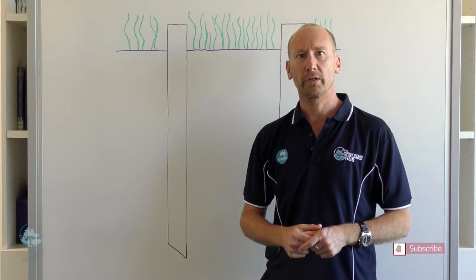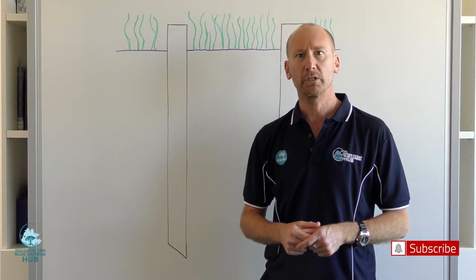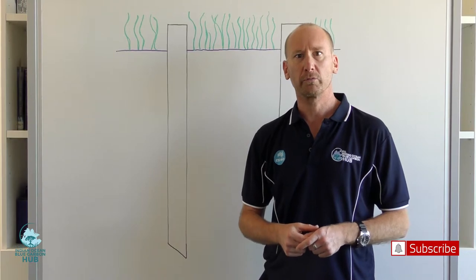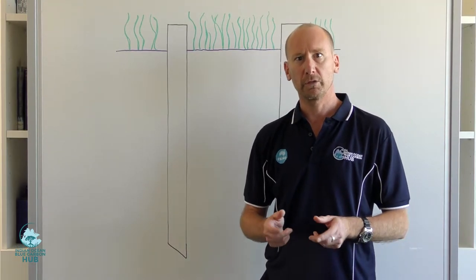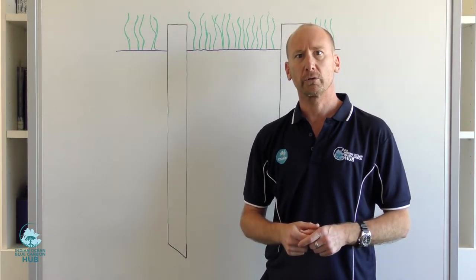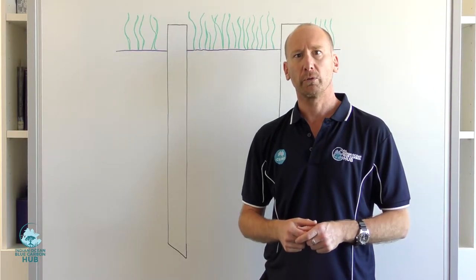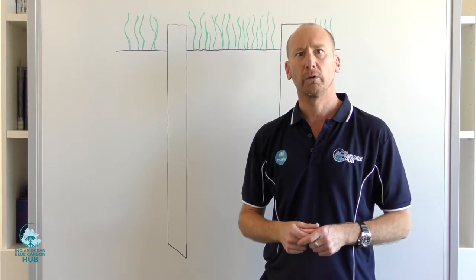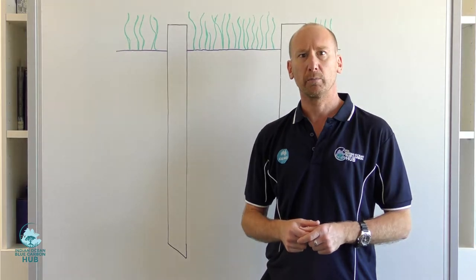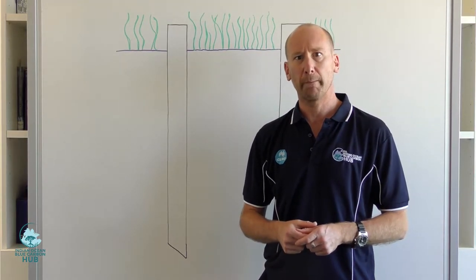Hello and welcome to the second video in the Iora Blue Carbon Hub video series. In the first video, we demonstrated how to take a core from inside a seagrass bed for the purposes of measuring organic carbon. In this video, we're going to show you how to do some calculations on the compression that we got when we retrieve that core and apply it to the samples that we get from the lab.